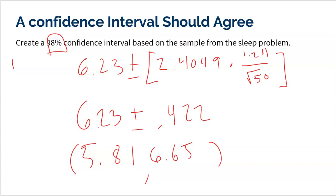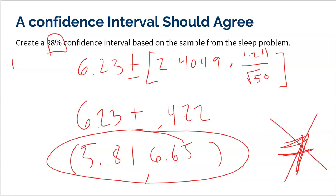So why does this interval agree with my conclusion from the test? Because 7 is not in the interval. 7 is way up here somewhere. My interval's saying I'm pretty confident that the students at Maggie's school get somewhere between 5.8 and 6.7 hours of sleep per night, showing that they do get less than 7, which is why I rejected 7 and said that students in her school are not getting enough sleep.